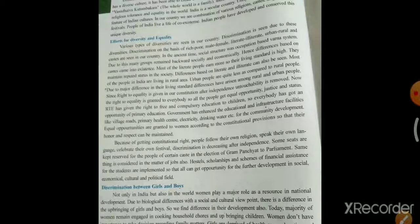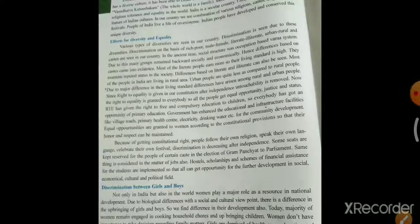Various types of diversities are seen in our country. You can see different varieties and discrimination arising due to these diversities. Discrimination on the basis of rich/poor, male/female, literate/illiterate — these differences are visible. गरीब-अमीर, male-female, पढ़े-लिखे और अनपढ़, urban-rural — ये सब differences आपको दिखते हैं।